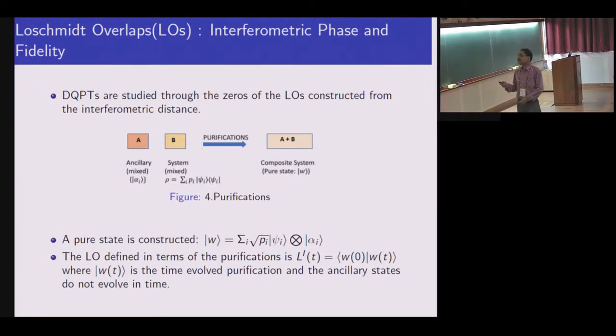The idea is that you have ancillaries. You have a composite system A and B, trace out B, and get a mixed state for A. It's the other way around: you have a mixed state A, add ancillaries and construct a bigger Hilbert space in which it's a pure state. If you trace out your ancillary, you get back your initial density matrix. I'm starting with an initial density matrix and construct a pure state by adding ancillaries. This is the corresponding Loschmidt overlap. If temperature goes to zero, it goes to the simple expression I gave in the beginning. First, construct a metric that measures the distance in density matrix space. Then, where the distance vanishes, I will get non-analyticities.